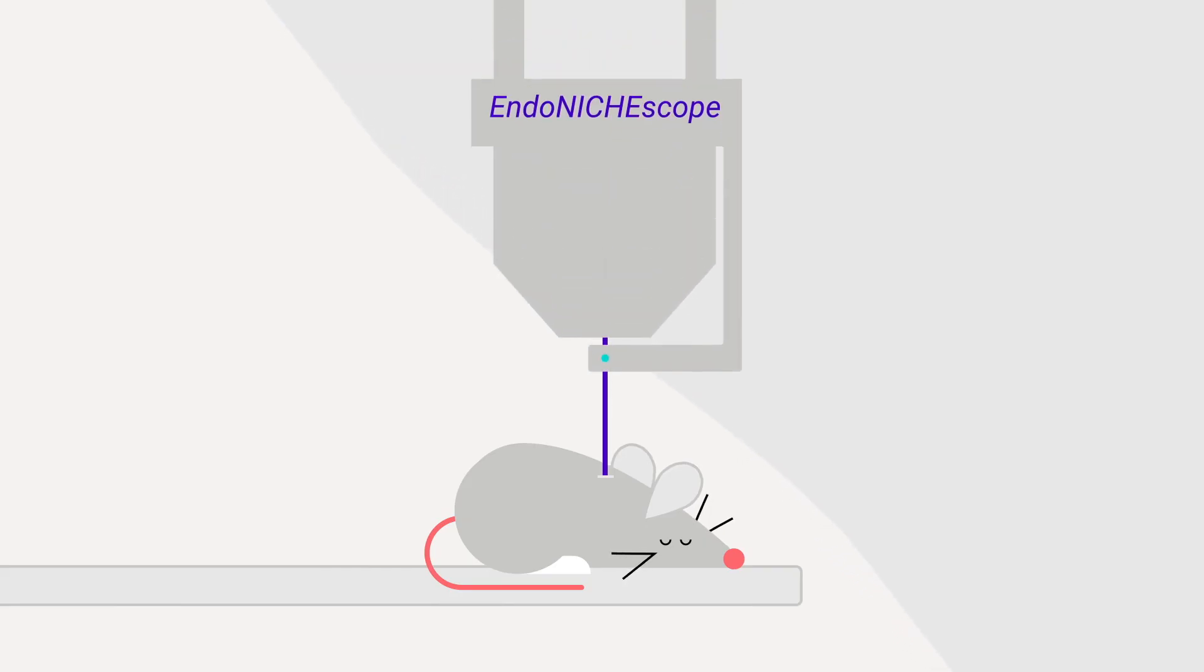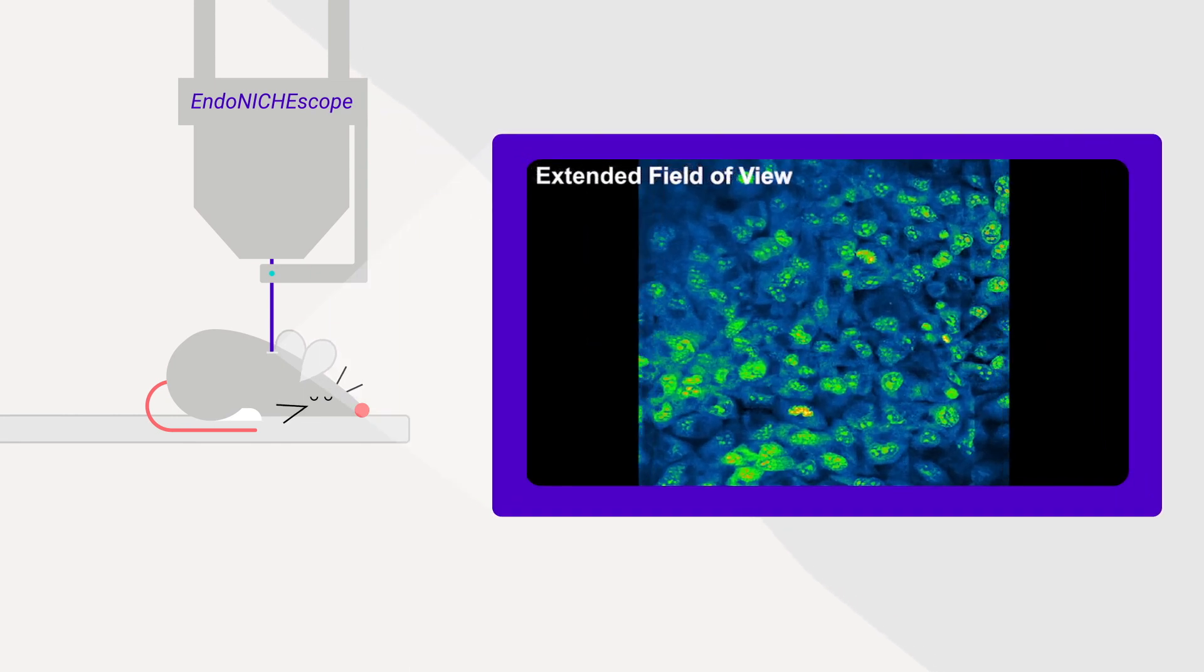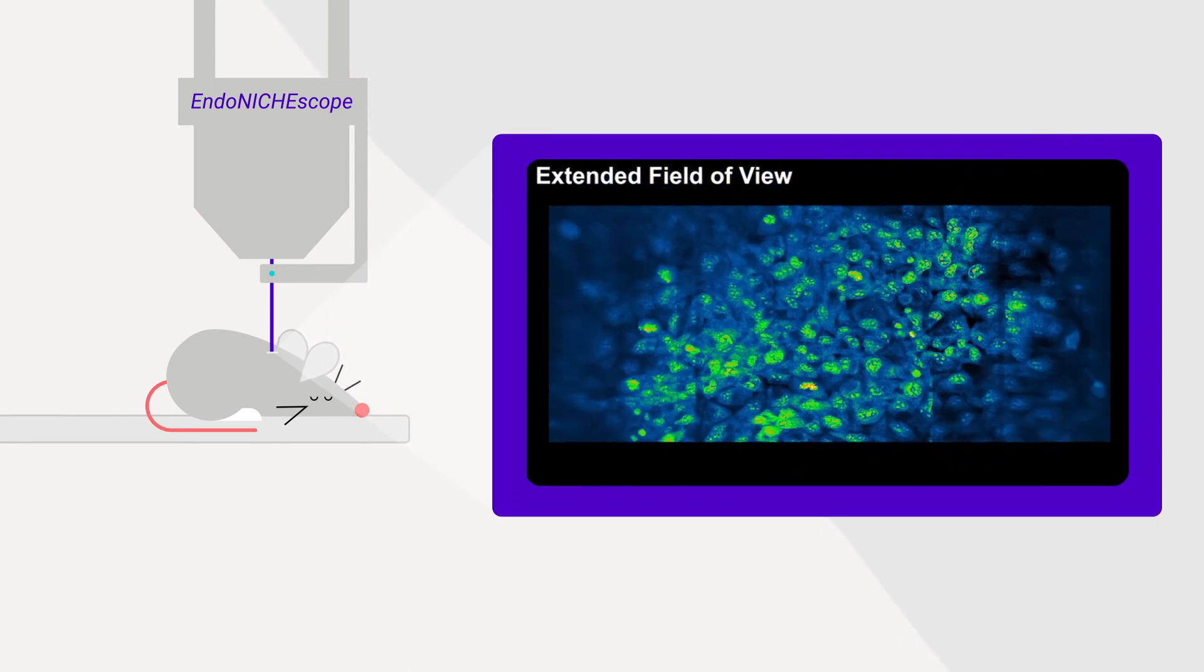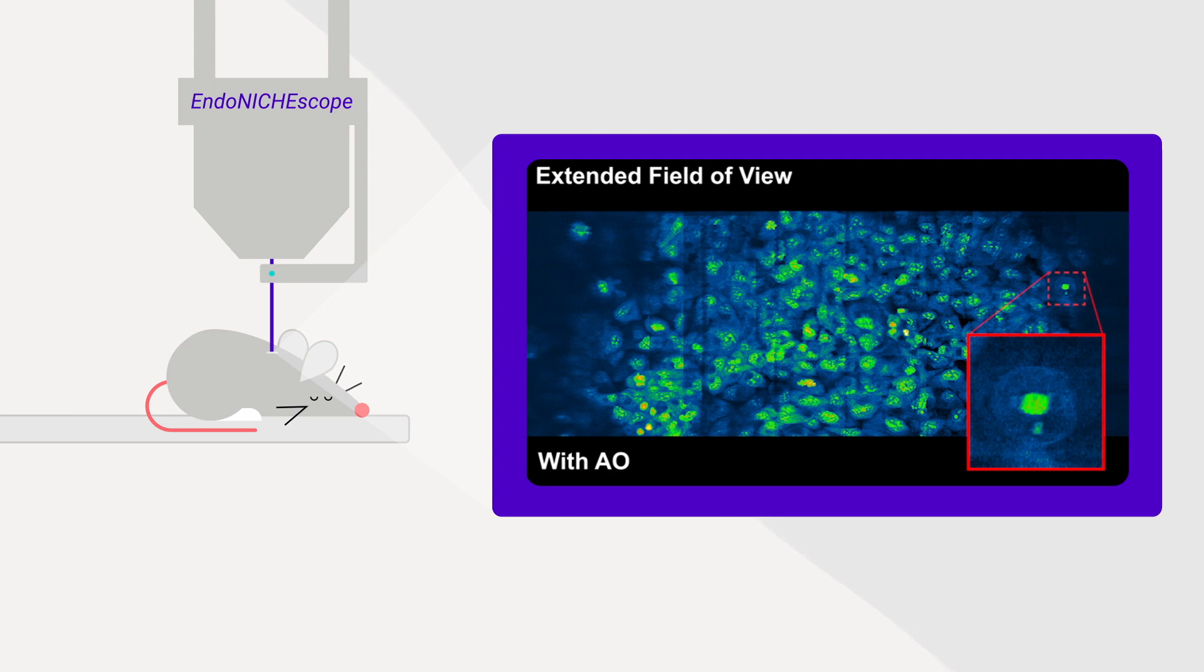The EndoneeScope is unique because it combines non-linear imaging, micro-endoscope, and rusted adaptive optics. By using the EndoneeScope, we can now photo-convert and mark specific dormant cancer cells that evade the immune system within a micro-tumor environment.